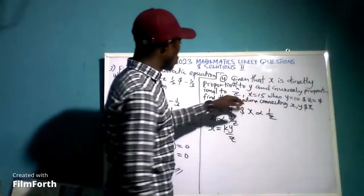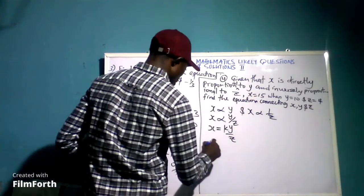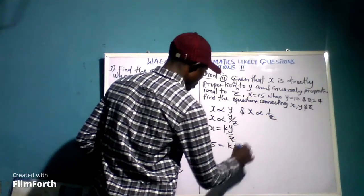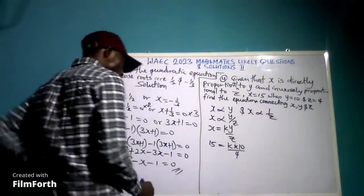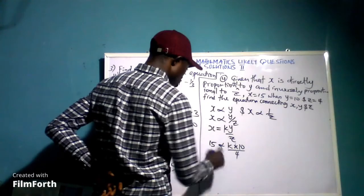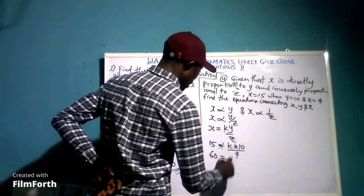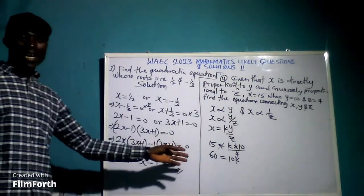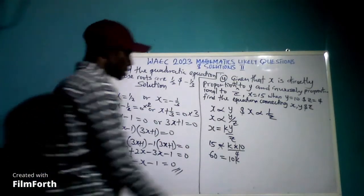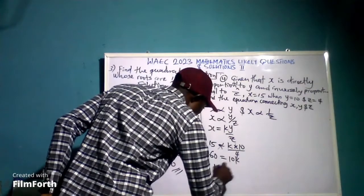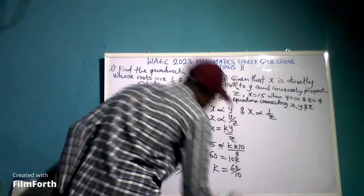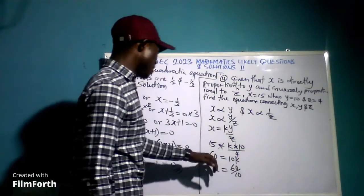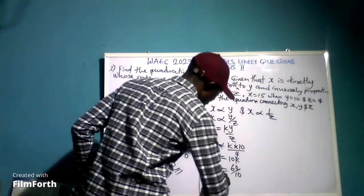We now insert the given values: x equals 15, y equals 10, and z equals 4. So 15 equals k times 10 over 4. By cross multiplication, 15 times 4 equals 60 equals 10k. Dividing both sides by 10, k equals 60 over 10, so k equals 6.